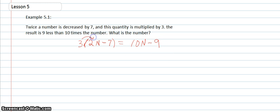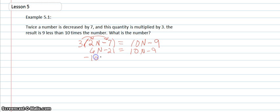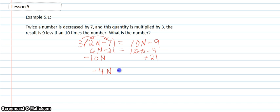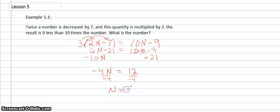I'll use the distributive property with 3, so that gives 6n minus 21 equals 10n minus 9. Then I'll subtract 10n from both sides and add 21 to both sides, giving negative 4n equals 12. Dividing by negative 4, n equals negative 3. We've found the missing number.